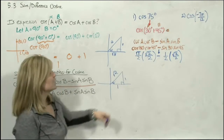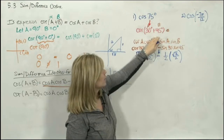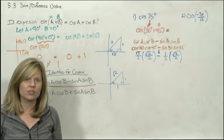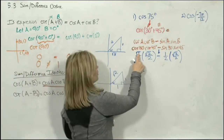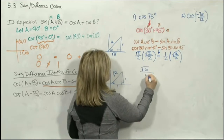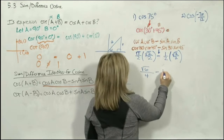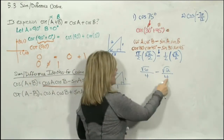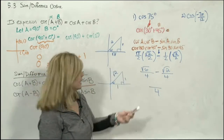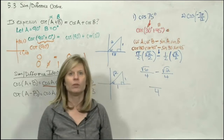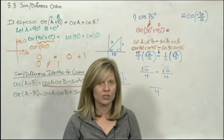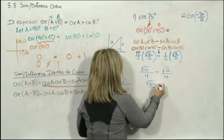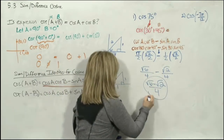By rewriting 75° as two angles we can look up, we can find the trig function values. Multiplying fractions — top times top, bottom times bottom — we get: (√3 · √2)/(2 · 2) minus (1 · √2)/(2 · 2), which is √6/4 minus √2/4. We have a common denominator of 4. Can we subtract √6 and √2? No — they're not like radicands. So the exact answer is (√6 − √2)/4.